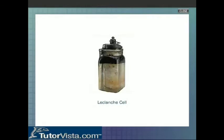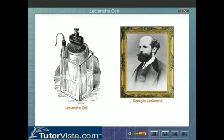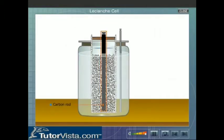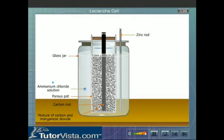Leclanchi cell. Construction. George's Leclanchi constructed the Leclanchi cell in 1865. In this cell, a carbon rod is placed in a porous pot containing a mixture of manganese dioxide, MnO2 and powdered carbon. The porous pot and an amalgamated zinc rod are placed in a glass jar containing saturated ammonium chloride solution.